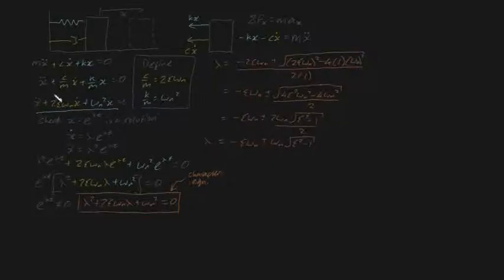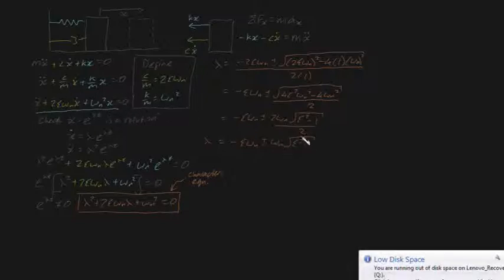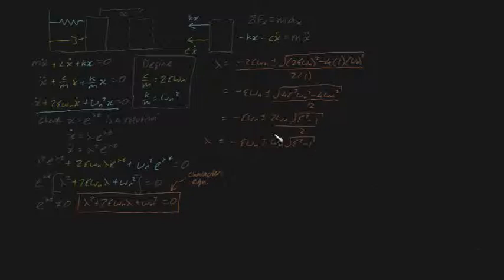In a previous video I showed you that if we have this second-order homogeneous differential equation, then x equals e to the lambda t is a solution if and only if lambda is equal to this expression. And this is where we can go three separate ways: where zeta, our damping ratio, is less than 1, greater than 1, or equal to 1. This video will be talking about what happens when zeta is exactly equal to 1.